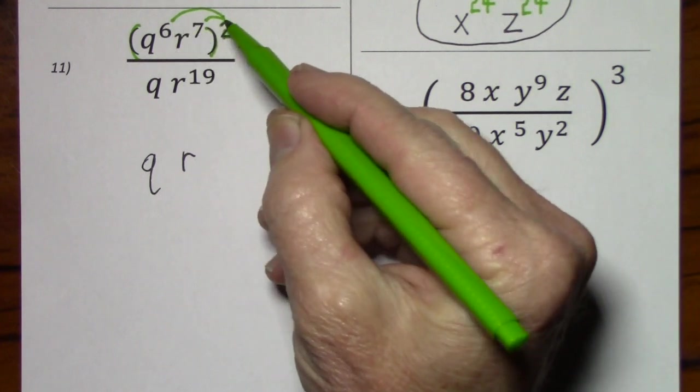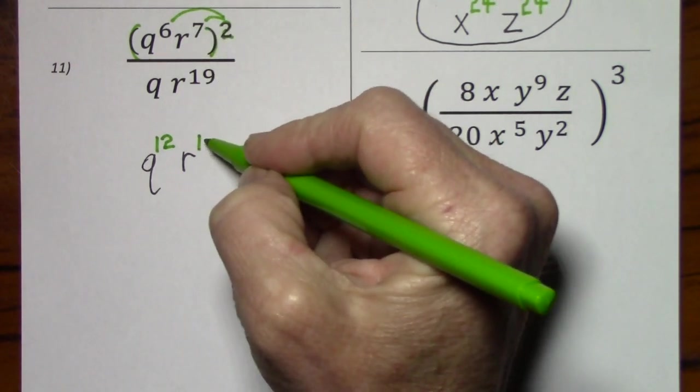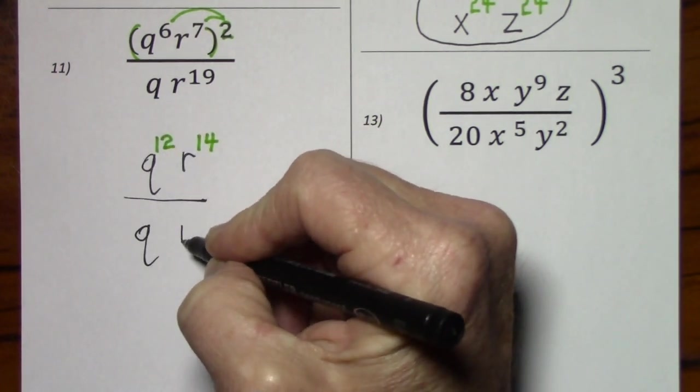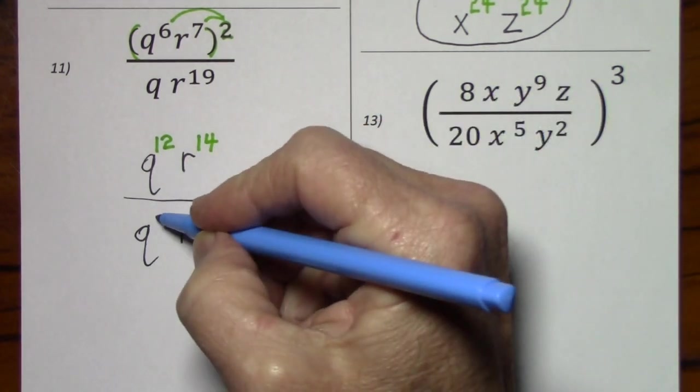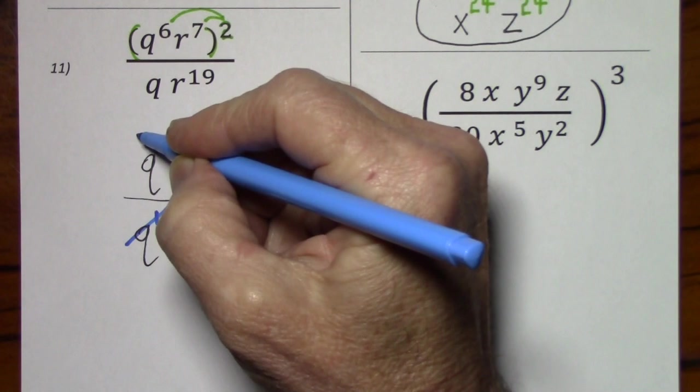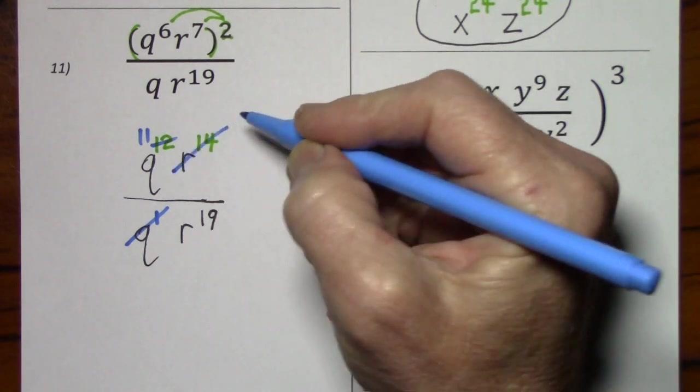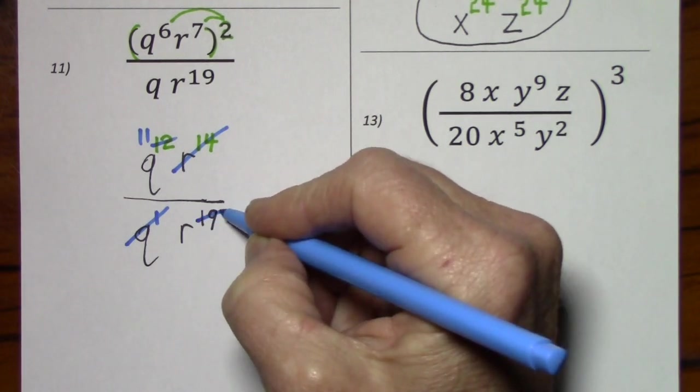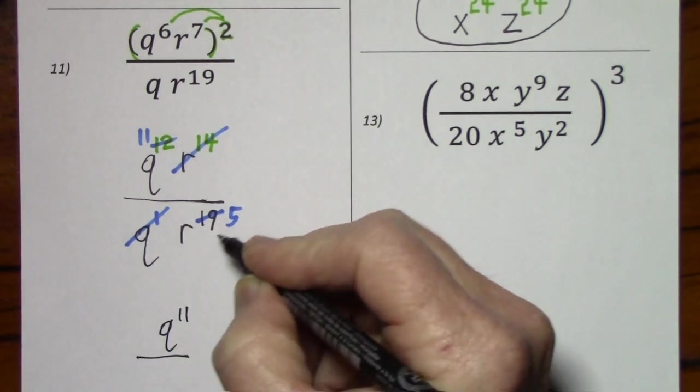So using the power rule, we'll multiply each exponent by 2. So q to the 6th times 2 is 12, and r to the 7th times 2 is 14. And this is all still over q, r to the 19th. Now the q's and the r's can interact. Remember this is q to the 1st. Cancel that out. If we subtract 1 from 12 we get 11. Looking at the 14 and the 19, cancel out r to the 14, so long as we subtract 14 from 19, and we're left with 5. So this gives us q to the 11th over r to the 5th.